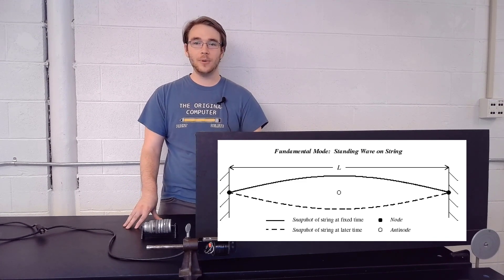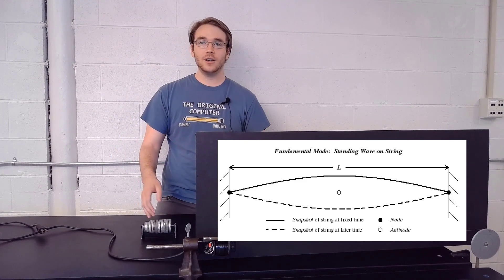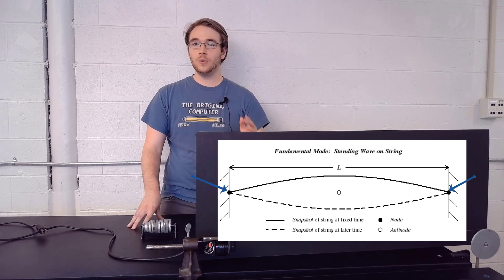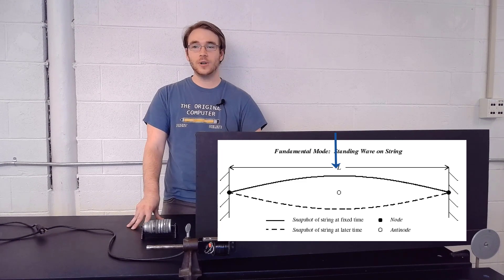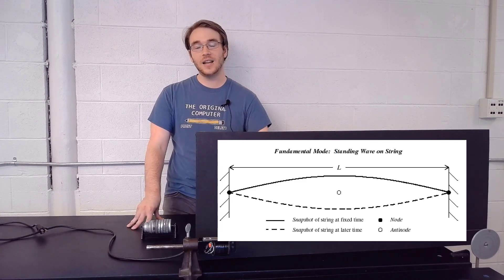When the string is vibrating in its fundamental frequency, it makes a pattern as shown in the figure. There are two nodes where there is no movement of the string and one antinode where the string is moving with its maximum amplitude. We call these vibrational patterns standing waves.